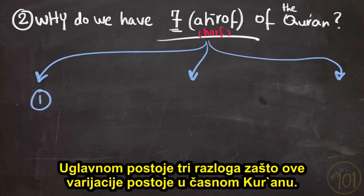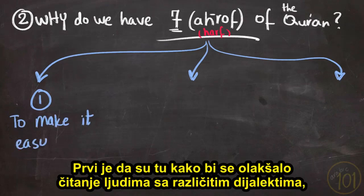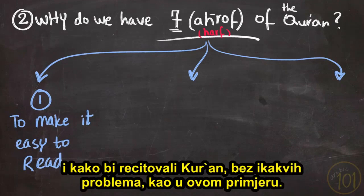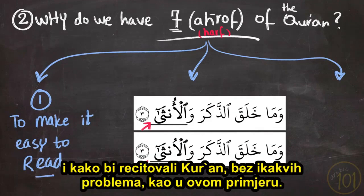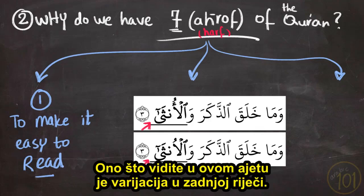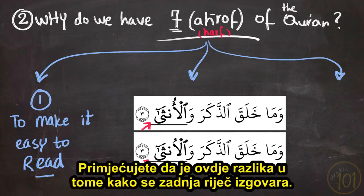There are mainly three reasons why there are variations of the Holy Quran. First, it is there to make it easier for people with different dialects to read and recite the Quran without any problems. Like in this example: what you see in this ayah is a variation in the last word. Notice and hear the difference between how the last word is pronounced.